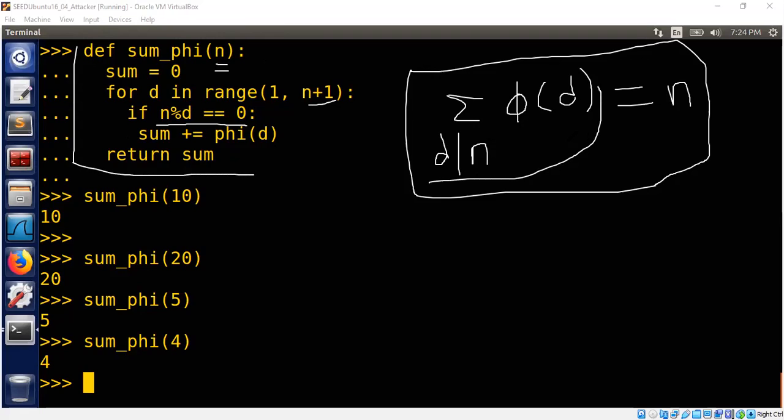So we get the summation that was shown here. This part of the equation is computed and we can see, for example, sum_phi(10) is 10. We passed 10 as input and get out 10. We did sum_phi(20) and get out 20. As you can see, sum of φ(d) for all d that divides n is nothing but n. That's the claim of the lemma which we will prove.